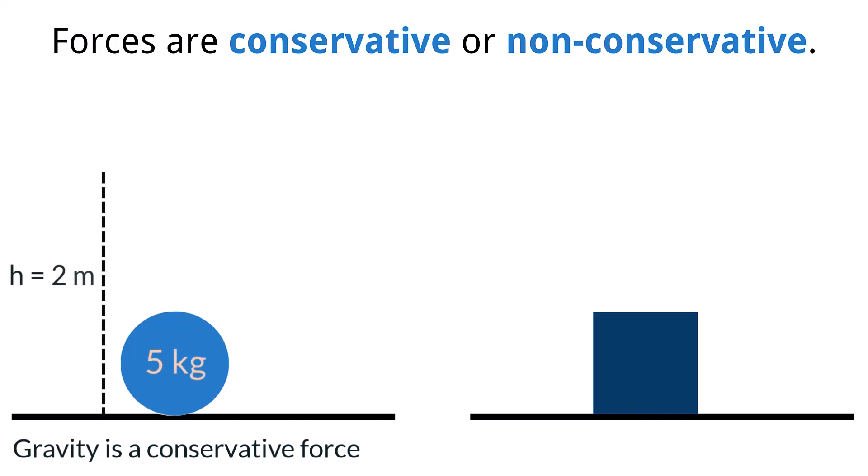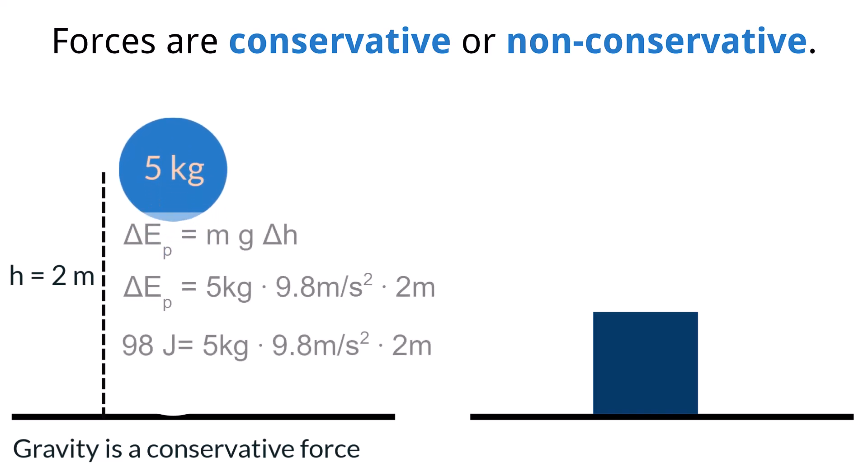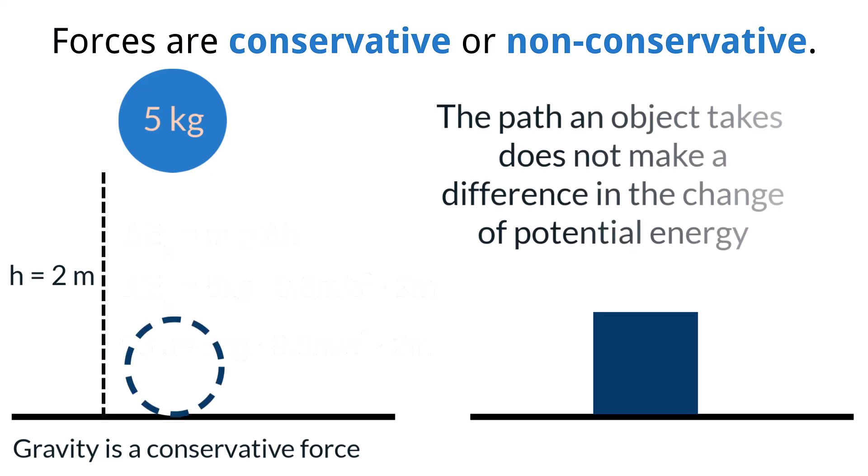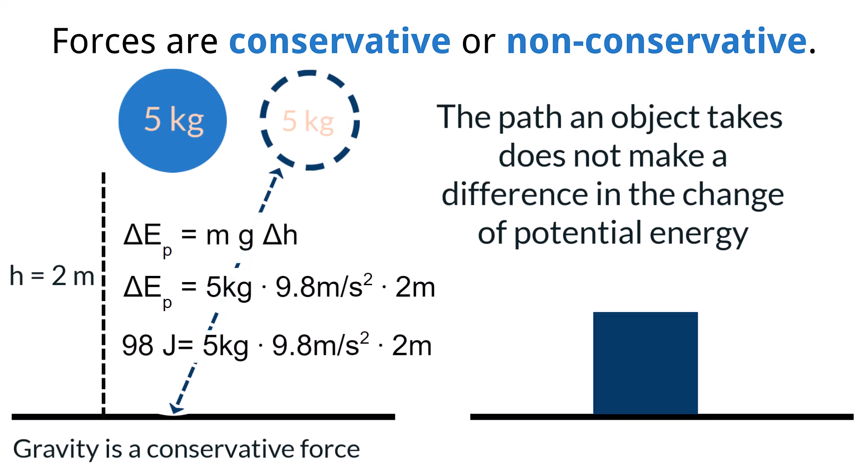Take for instance a ball with a mass of 5 kilograms is raised to a height of 2 meters in a vertical path. The value of its change in gravitational potential energy is 98 joules. Now take the same ball and raise to the same height of 2 meters, but this time at an angle of 30 degrees, and then calculate the gravitational potential energy at a height of 2 meters, and the result is the same of 98 joules. In this way, the path to get to the 2 meter height does not make a difference in the gain in potential energy of the ball.